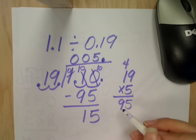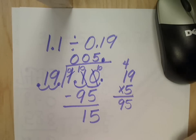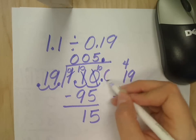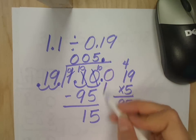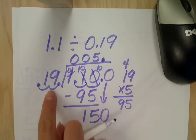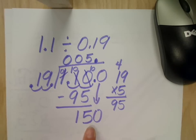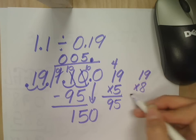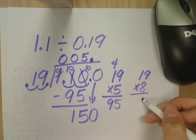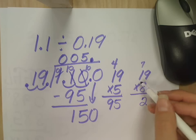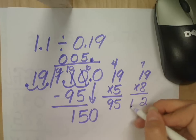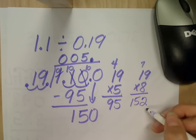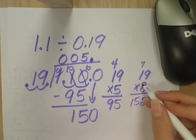What do I do now? I don't have any numbers to bring down. Add a zero. I already have my decimal, so I can just bring down my zero. Nineteen into one fifty? Eight. Let's try eight. Nineteen times eight. Eight times nine? Seventy-two. Eight times one is eight, plus seven? Fifteen. Oh, is that too much? Yeah. So then I'm going to go down to seven times.